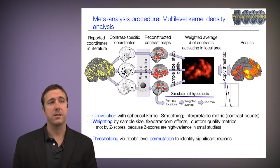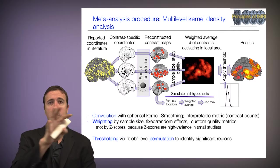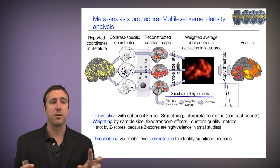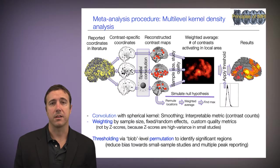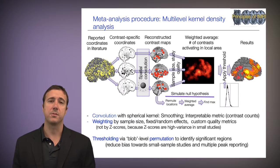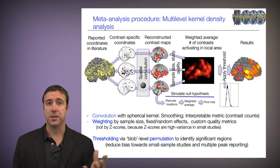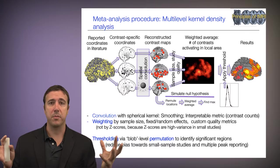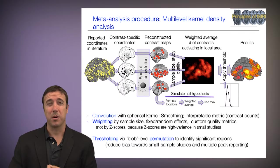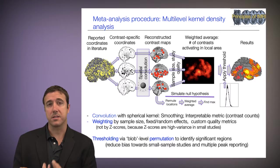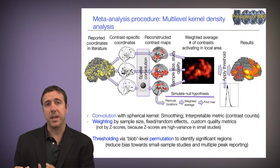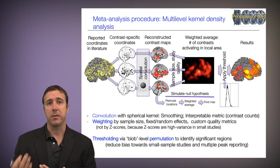We do thresholding via blob-level permutation. That means we take those reconstructed contrast maps and move the whole blob around, preserving the spatial structure of the activations to identify significant regions. This reduces bias towards small sample studies and towards studies that report more peaks. We can't just summarize the number of peaks overall, because some studies report many peaks, others very few — and sometimes the smallest studies report more peaks because they have high variability in their maps.